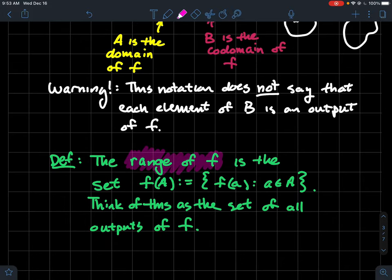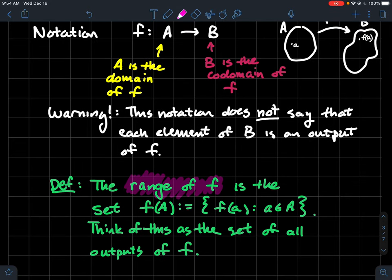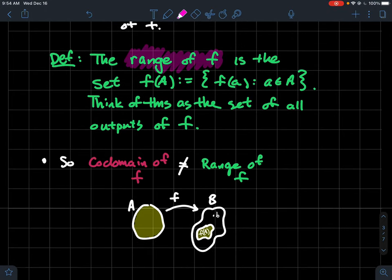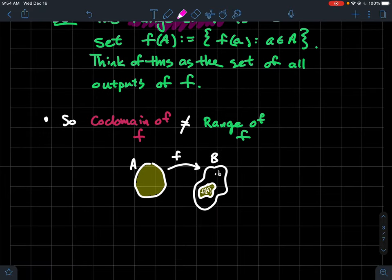So what's that called? The range of f is the set, usually denoted by f of A. So f of the domain. So think about like you're plugging every point in this set into f, kind of one at a time. The set of all points f of a where a is in capital A. So that's the range. Think of that as the set of all outputs of f. So there's a distinction here. I'm not saying B is the range, B is the codomain. And there's this other thing that's called the range. They're related to each other, but they're not equal. So the codomain of f is not the same thing as the range of f.